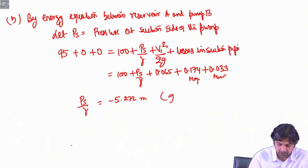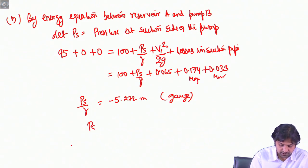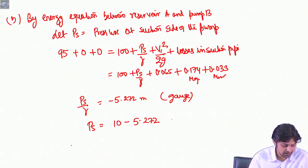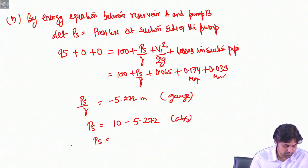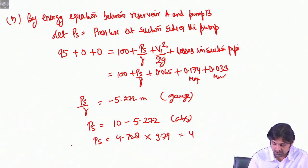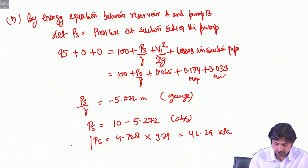This is gauge pressure. The absolute pressure head is 10 + (−5.272) = 4.728 m. Converting: 4.728 × 9.79 = 46.29 kPa absolute.